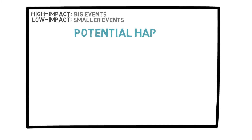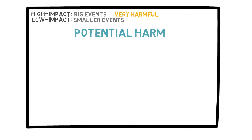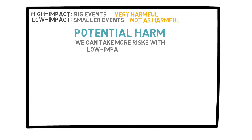To do this, we need to look at the potential harm that could result from the decision. If a decision is big or high-impact, it could potentially be very harmful to your overall goal. On the other hand, if we make the wrong choice on a low-impact decision, the result probably won't be too bad. Thus, we can take more risks in these situations because the potential harm is limited.